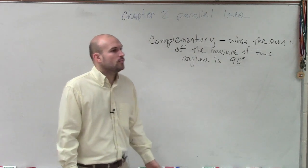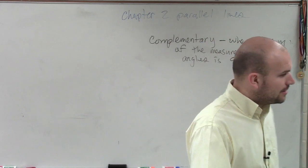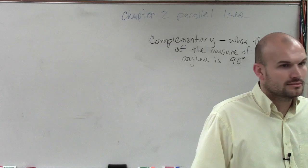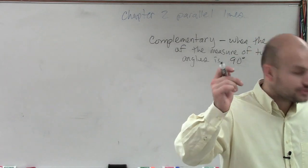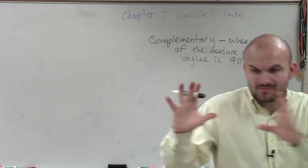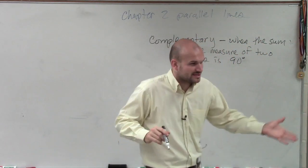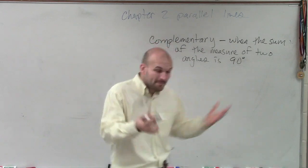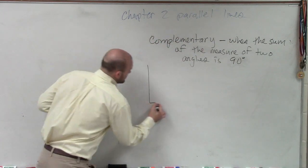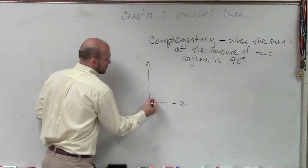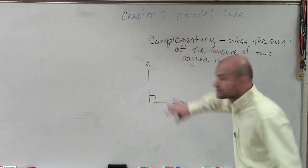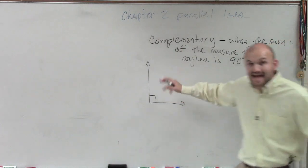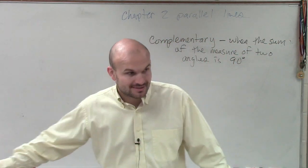What do we know creates a 90 degree angle? A right angle. And how do we know it's a right angle? A box. That box indicates it's a right angle, which means the degree measure of this angle is 90 degrees.